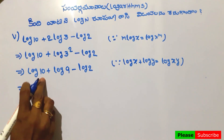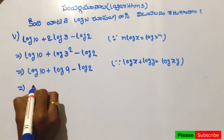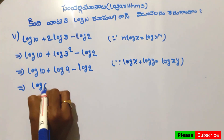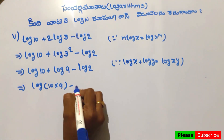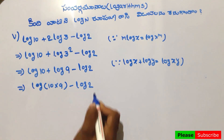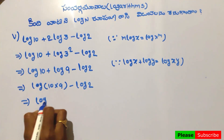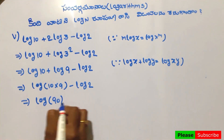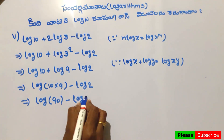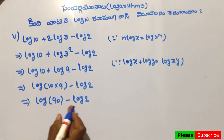Here, log 10 plus log 9 equals log 10 into 9, which gives log 90. So the expression becomes log 90 minus log 2.